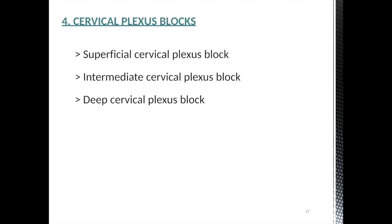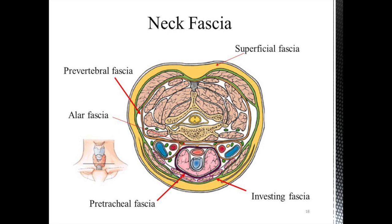There are three types of cervical plexus block — superficial, intermediate, and deep — depending on the location where the nerves are blocked. The most important concept for understanding the cervical plexus block is understanding the neck fascia. We must understand the neck fascia, otherwise we can make a serious mistake. If you understand the neck fascia, it becomes a very simple, easy, and understandable block.